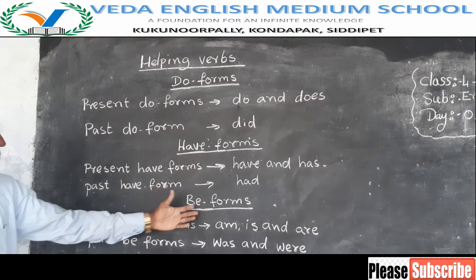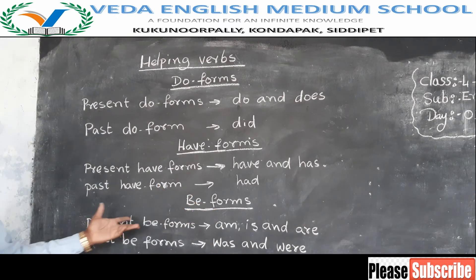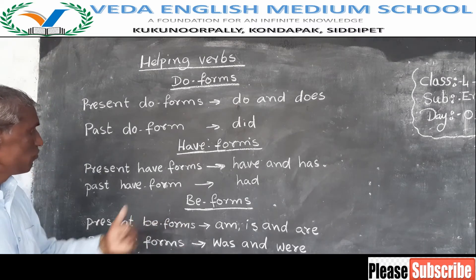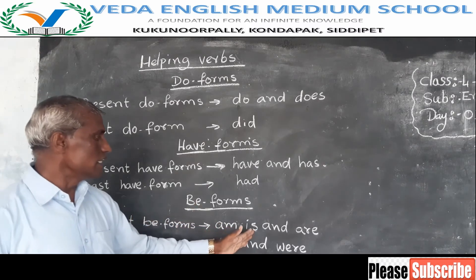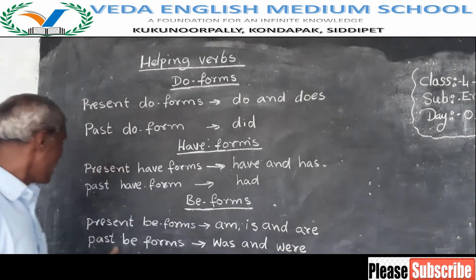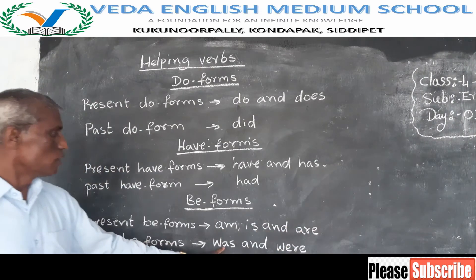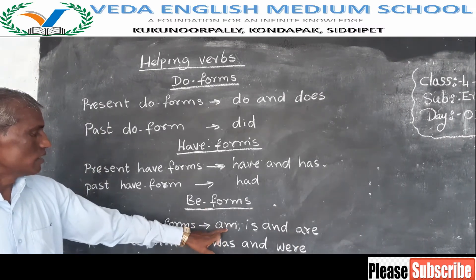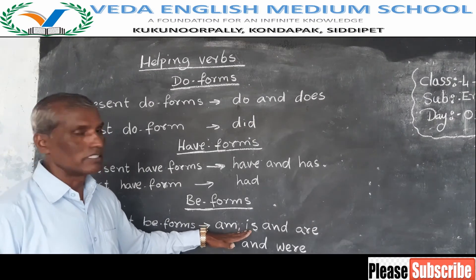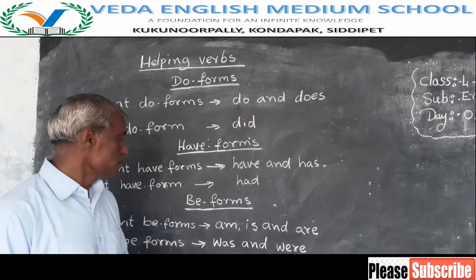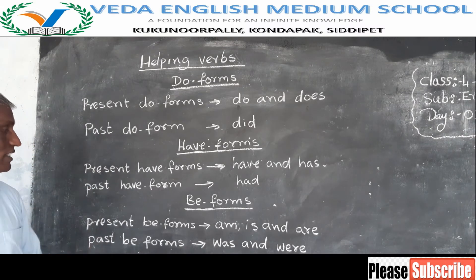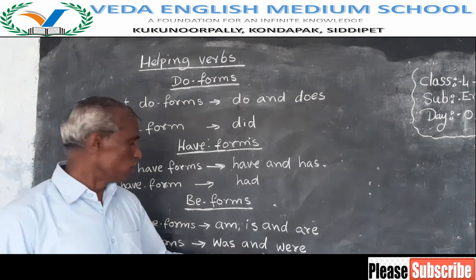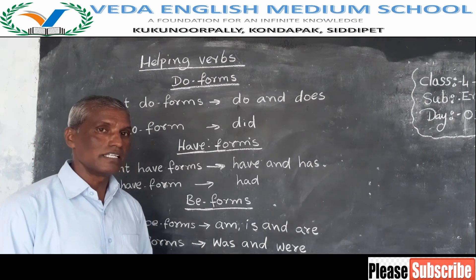Then we have be forms. There are also present be forms and past be forms. Present be forms are am, is, and are. Past be forms are was and were. These are also helping verbs. When we use present be forms along with V4, it is always present continuous tense. If we use past be forms plus V4, it is always past continuous tense.